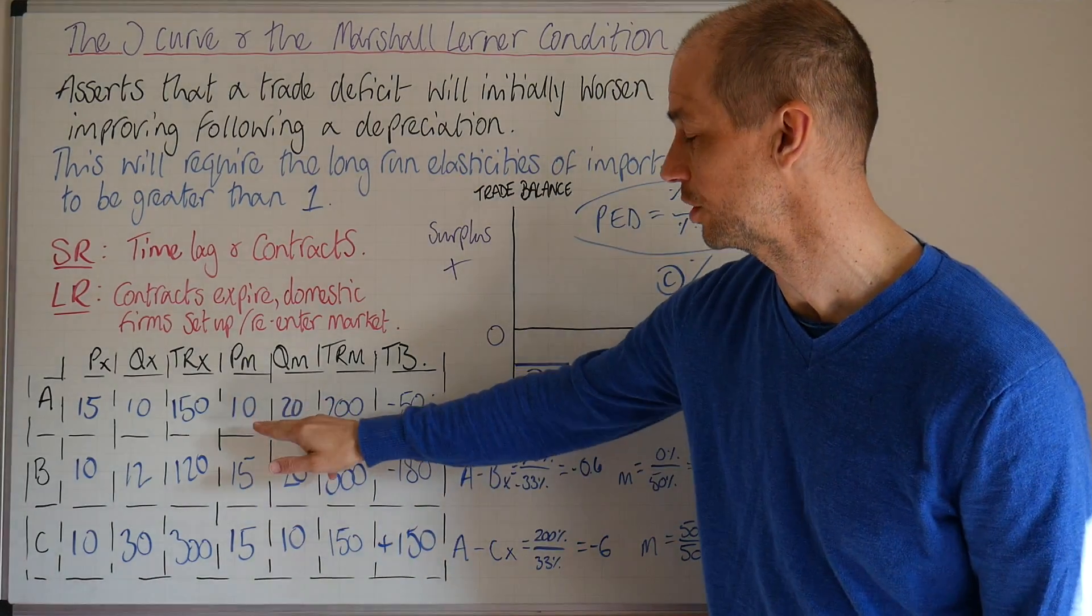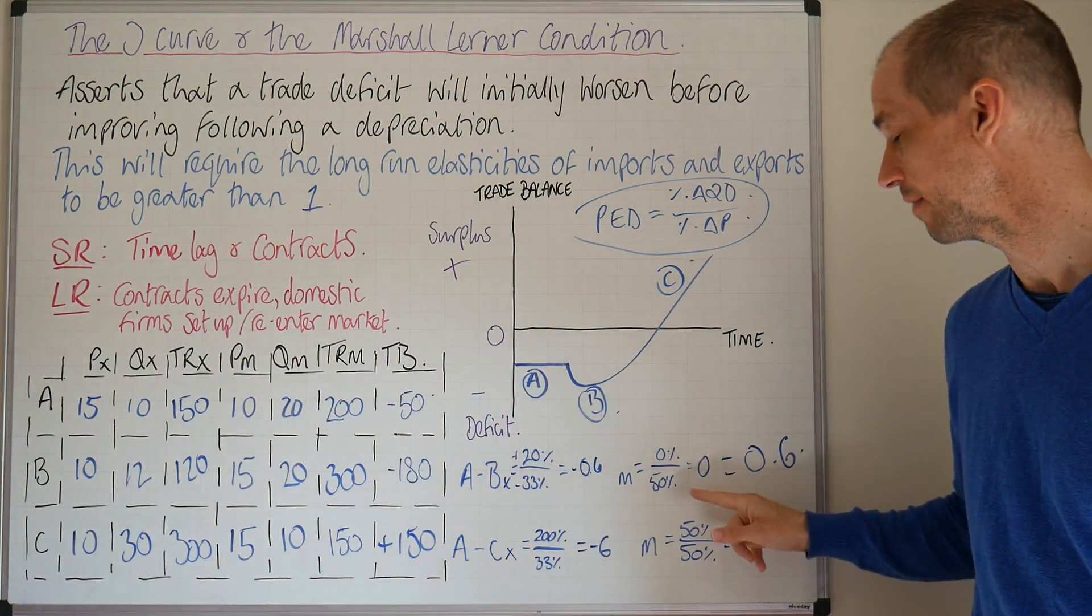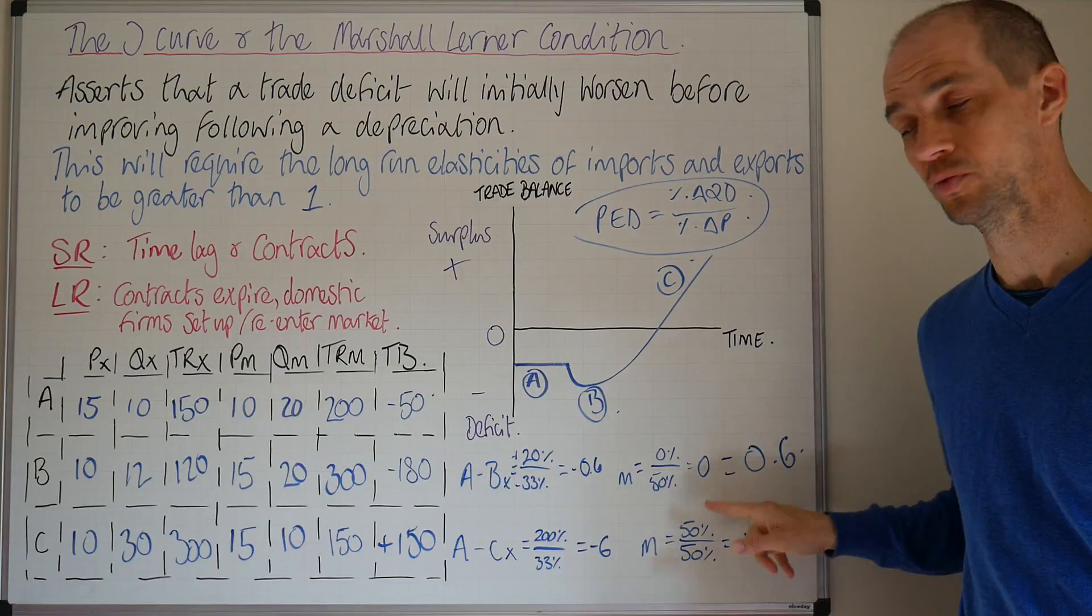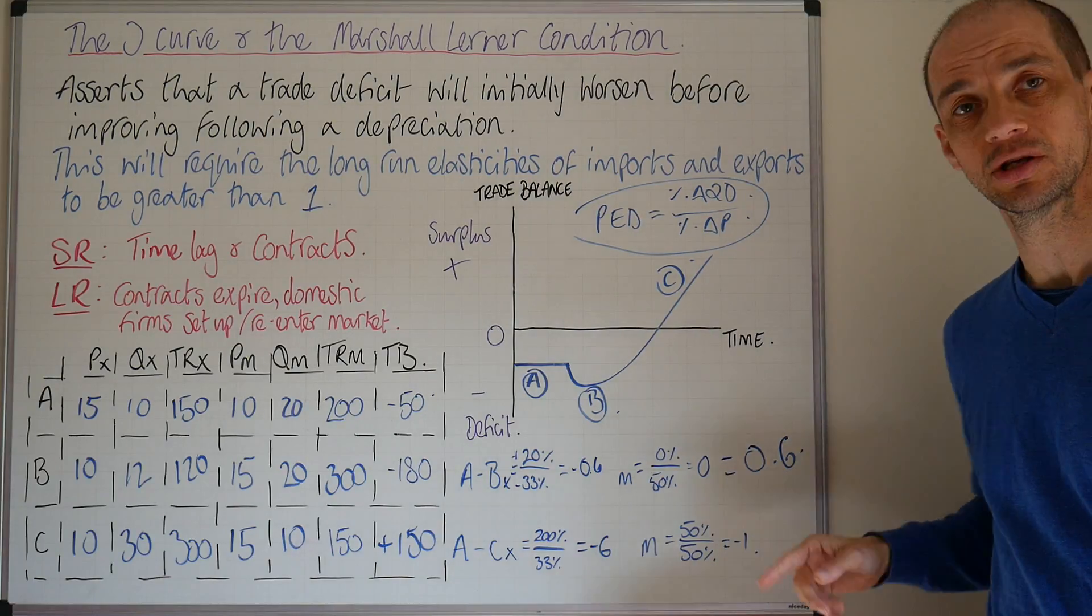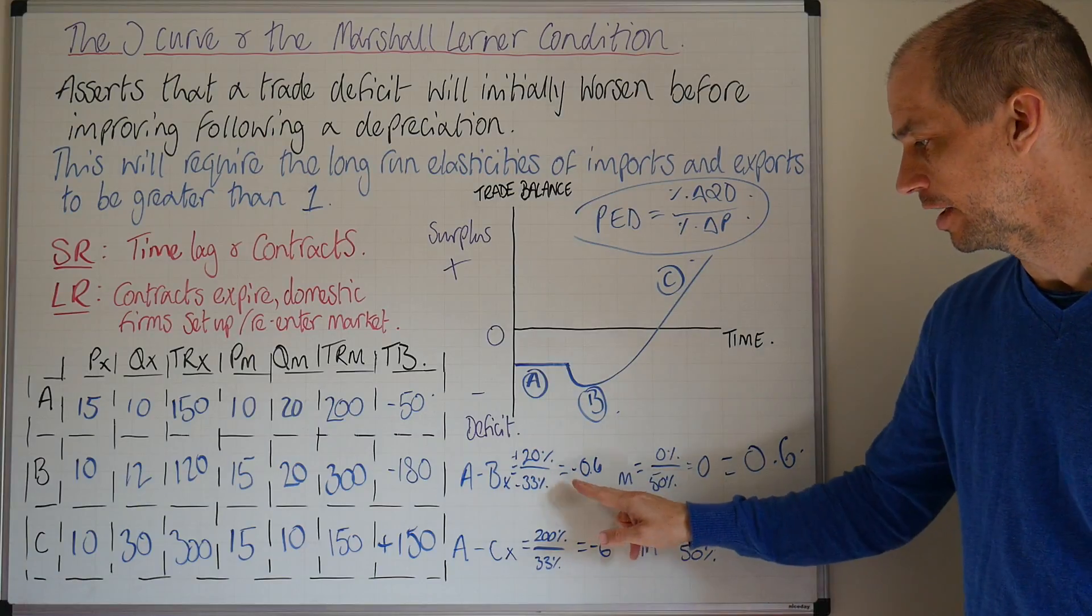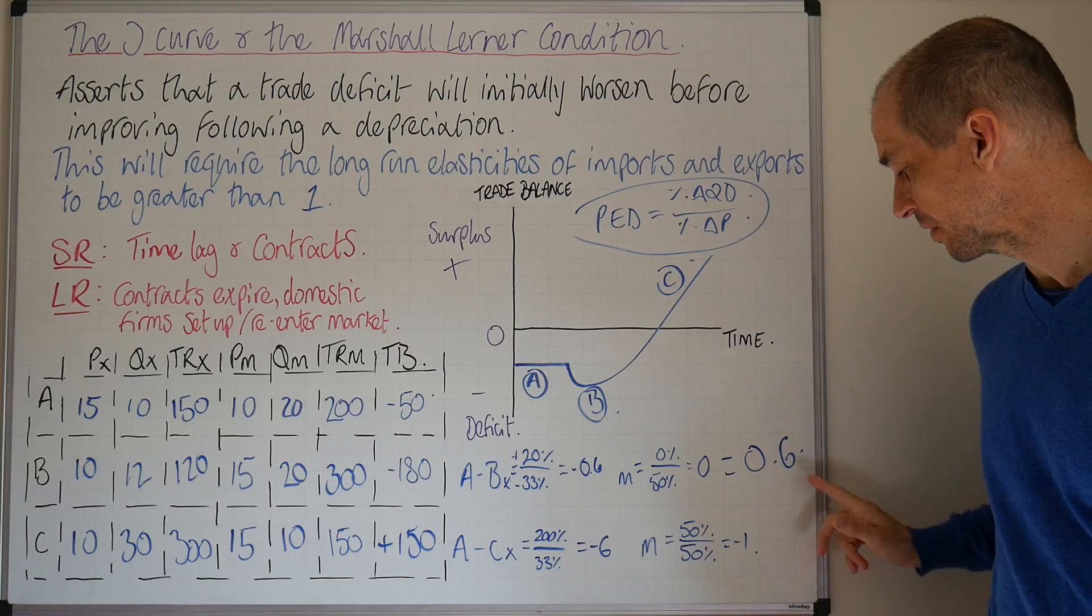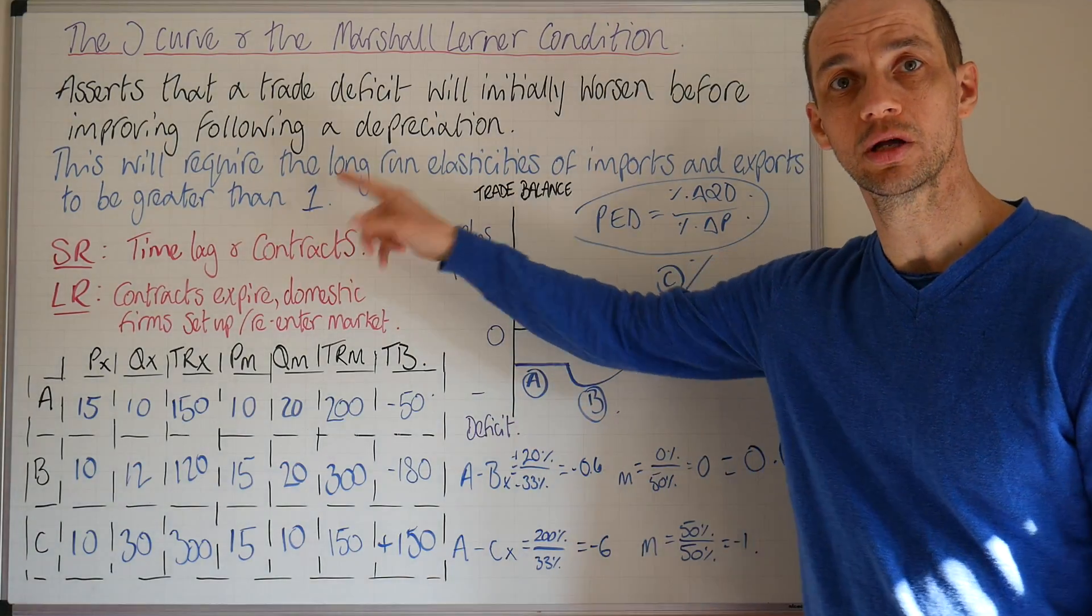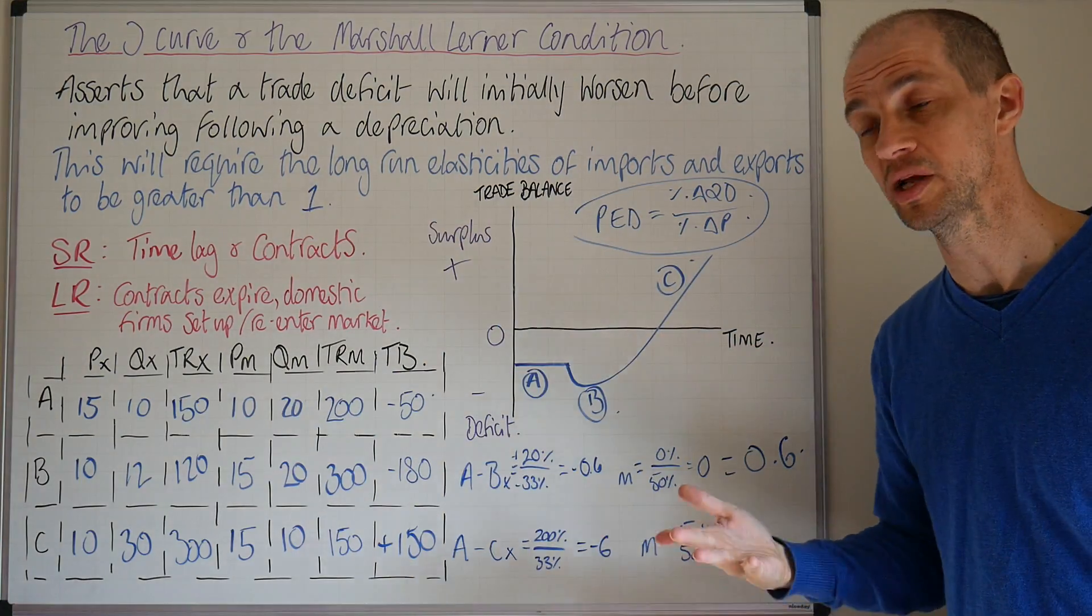When it comes to imports, there's a 50% increase in price level but no change in quantity demanded. Thus we end up with zero and we end up with 0.6 when you ignore the negative figure. Where you've got 0.6, we can see the Marshall-Lerner condition is not upheld because the sum total of those elasticities is not greater than one.